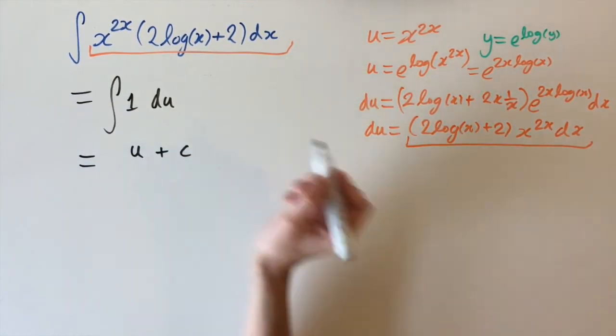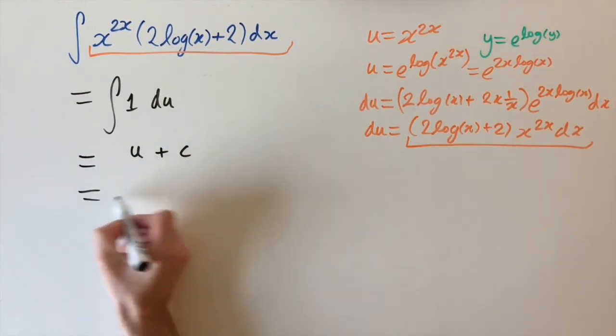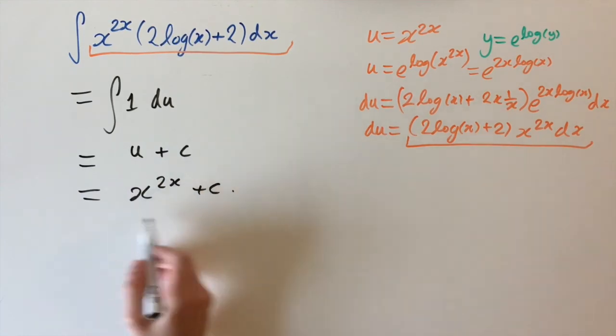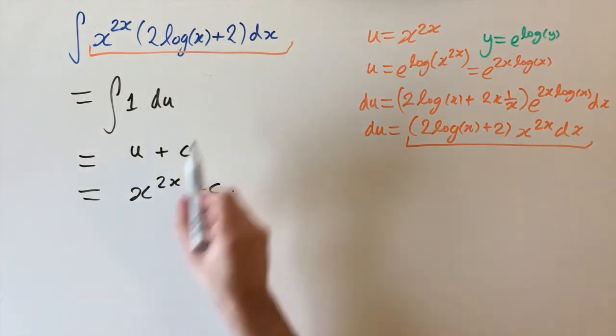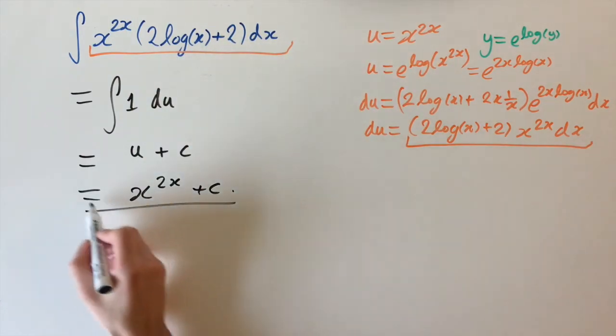Our answer should be in terms of x, so we write x to the power of 2x plus c. So that's a bit of a long way around to see that the antiderivative of this function is just x power of 2x. That's our answer.